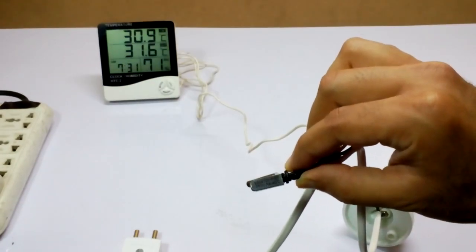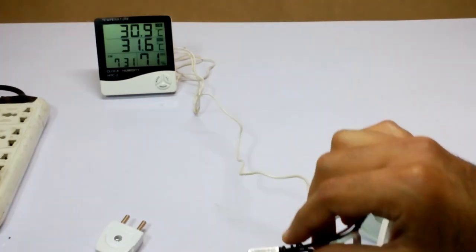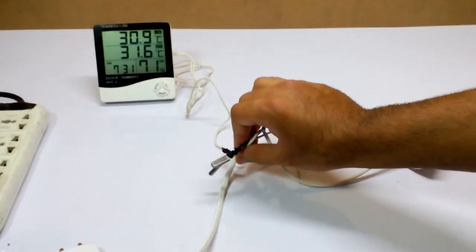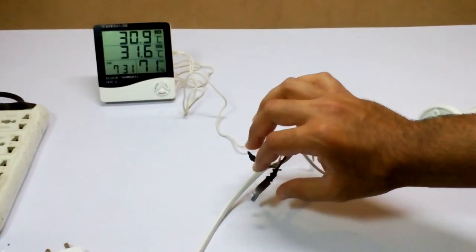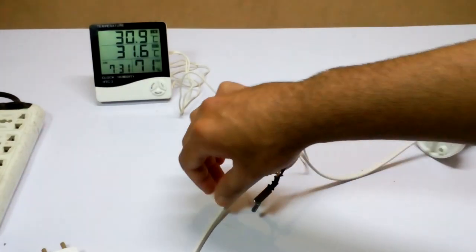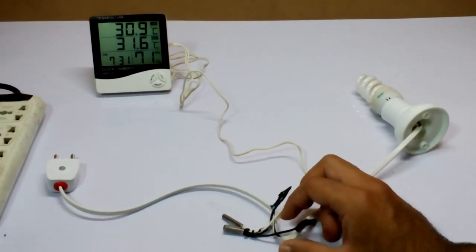It is going to turn off anything if the temperature goes above 40 Celsius. So as soon as it goes to 40 Celsius it's going to trip off anything which is connected with it. It could be a bulb, it could be a fan, it could be an alarm.